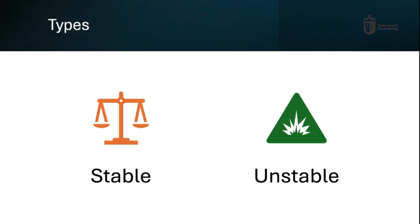We have two major types of angina: stable and unstable. Stable angina usually occurs with physical exertion, while unstable angina occurs with minimal exertion and at rest as well.